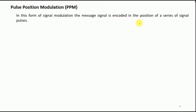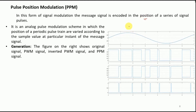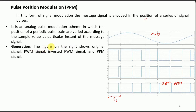Pulse position modulation (PPM) encodes the message signal in the position of a series of pulses. From the plot, for a message signal m(t), each pulse occurs within a given time period T_S. As the amplitude increases or decreases, the position of the pulse moves left or right within that time frame. It is an analog pulse modulation scheme in which the position of a periodic pulse train is varied according to the sample value at each instant of the message signal.